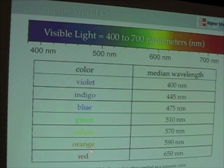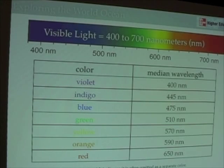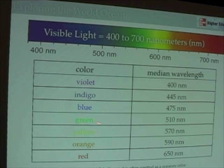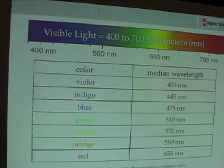ROY G BIV goes from long wavelengths to short wavelengths — red, orange, yellow, green, blue, indigo, violet. Maybe you heard a clever song or jingle to help remember the colors in order. Now, indigo is often not included in the color spectrum because many people can't see it. Sometimes you'll see just red, orange, yellow, green, blue, and violet with indigo skipped. But it doesn't mean it's not a true color — most people simply can't distinguish the difference between indigo and violet.